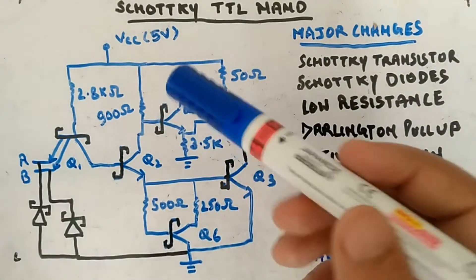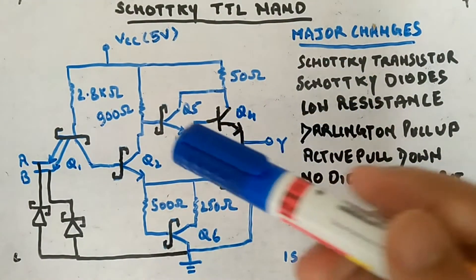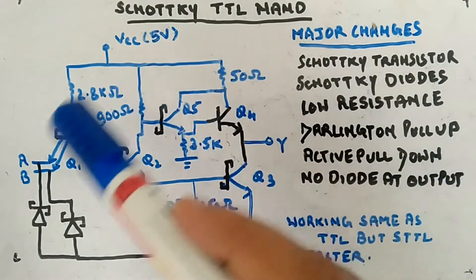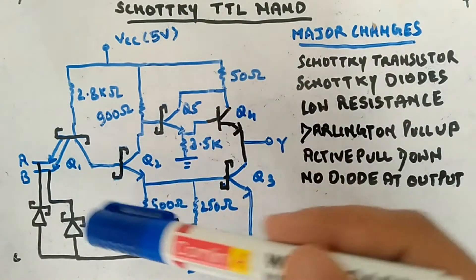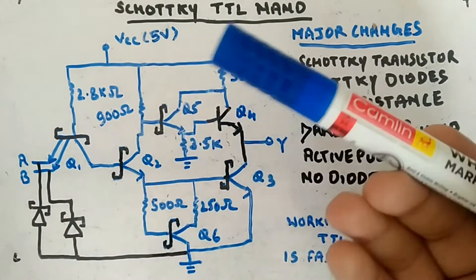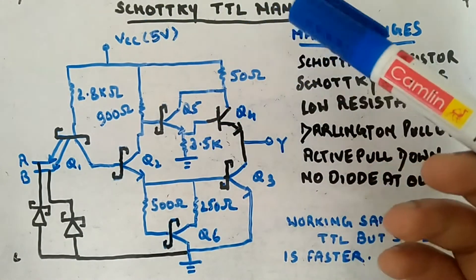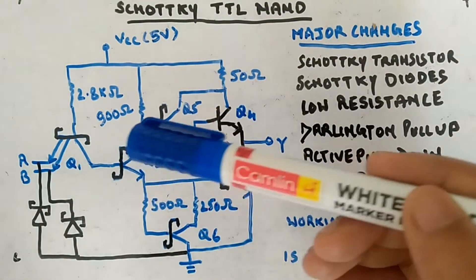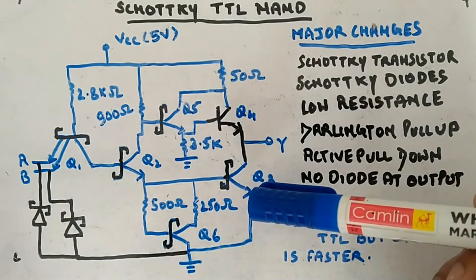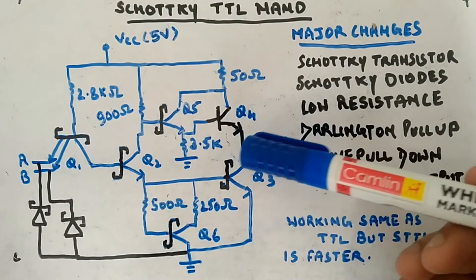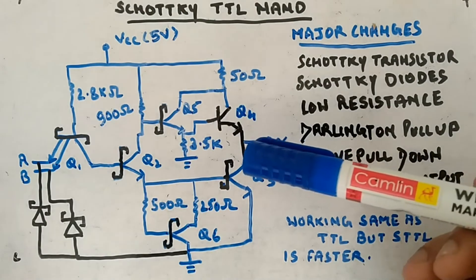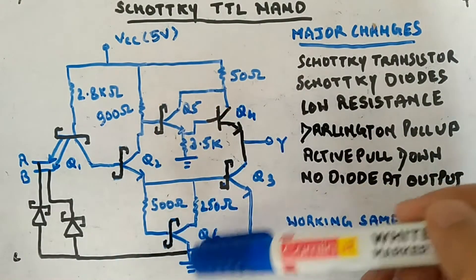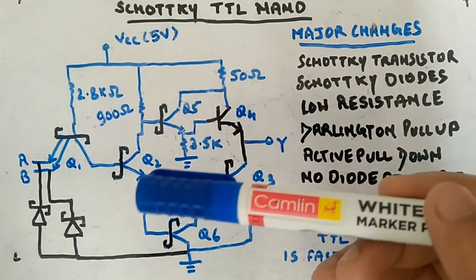Here we are looking at Schottky TTL NAND gate. We have seen Schottky diode and Schottky transistor. Now I am accommodating those transistors and diodes in a TTL circuit. You are already aware of TTL NAND gate — this transistor was there, this transistor was there, this transistor was there, and this transistor was there in totem pole. You had a diode as well. These are new additions you can see.